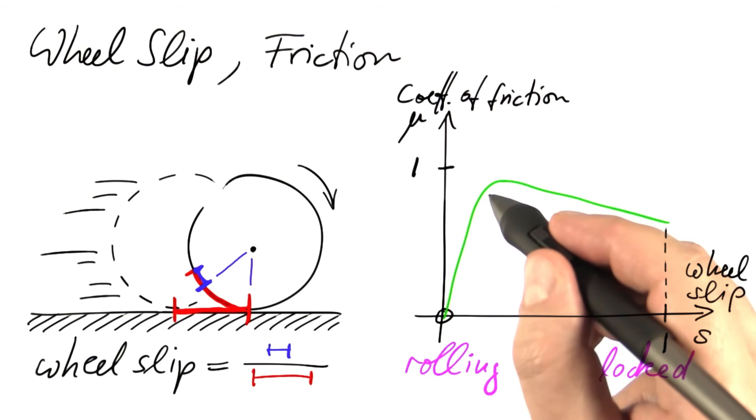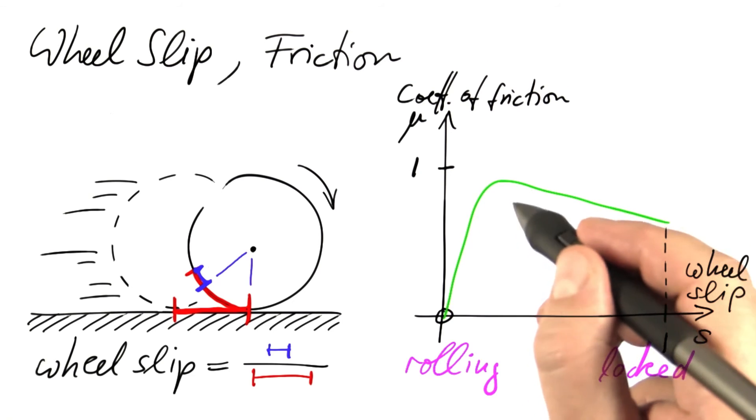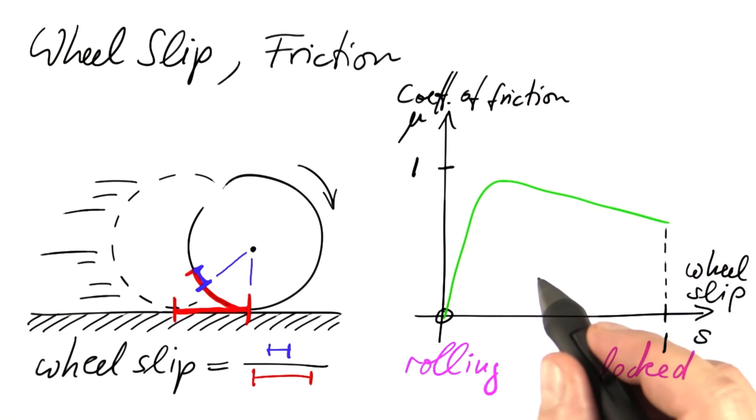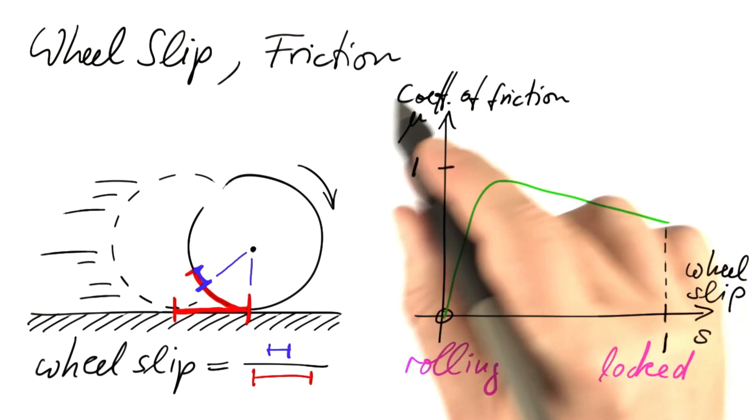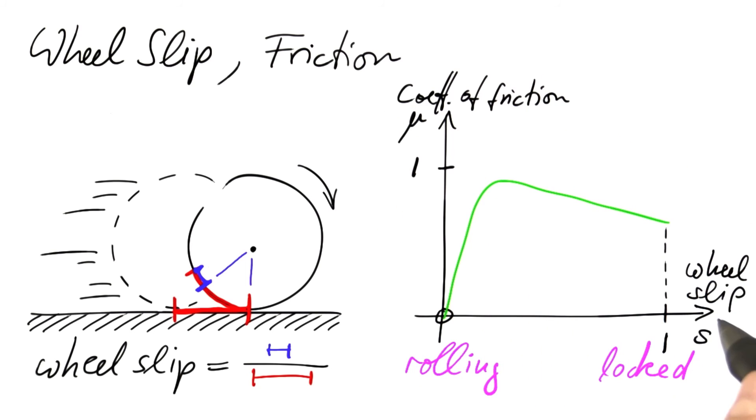When there's just a slight amount of slippage between the wheel and the surface, the wheel develops the maximum friction. And what's going to follow, we are working with one single curve to describe how the coefficient of friction depends on the wheel slip.